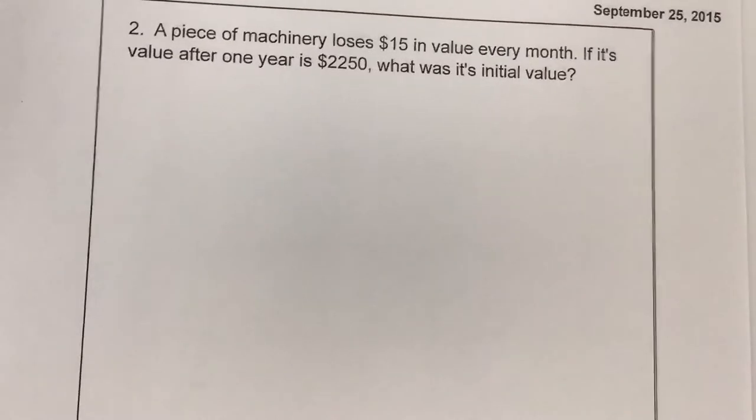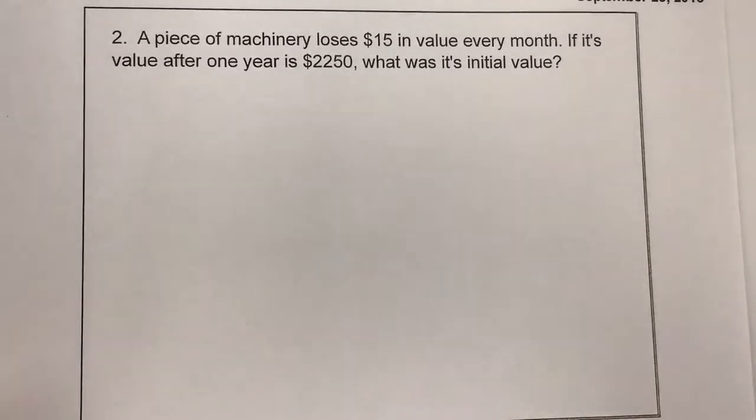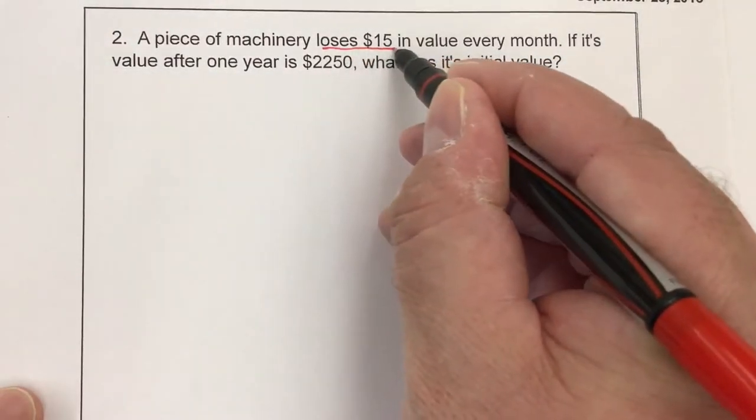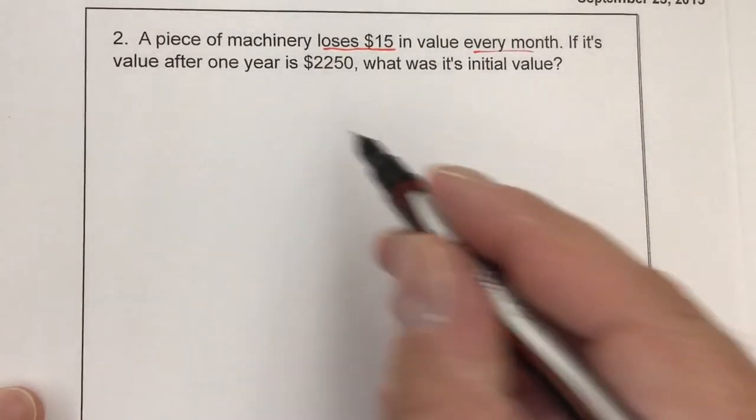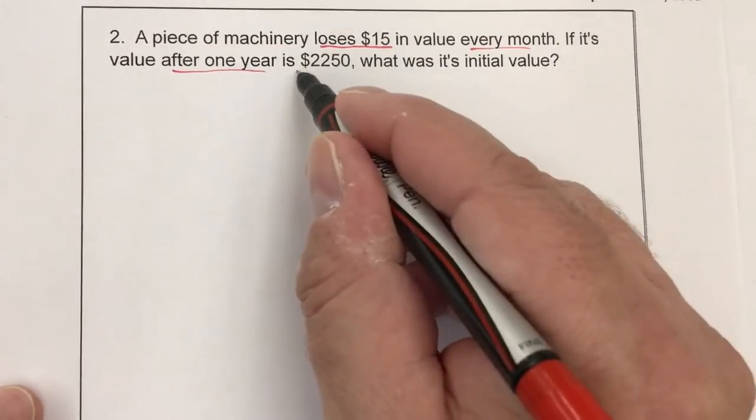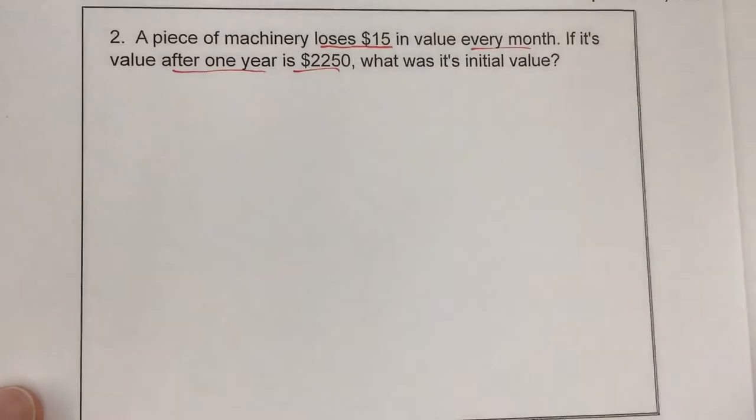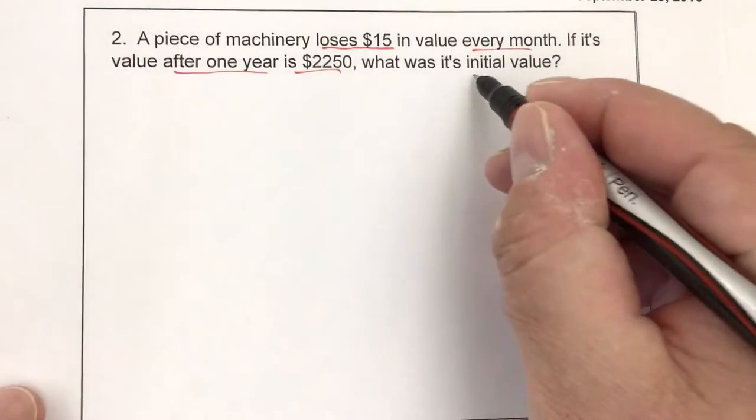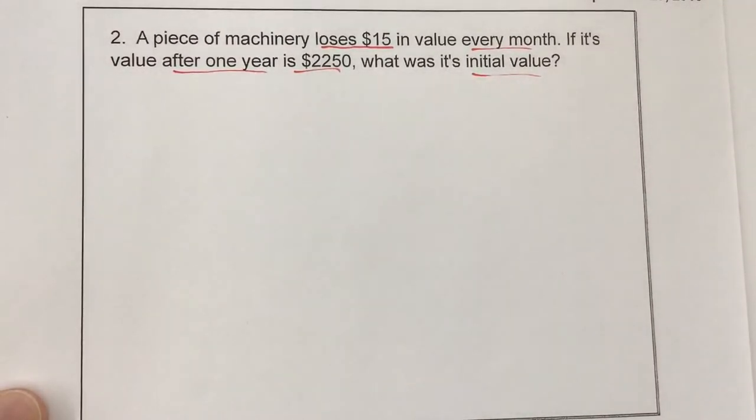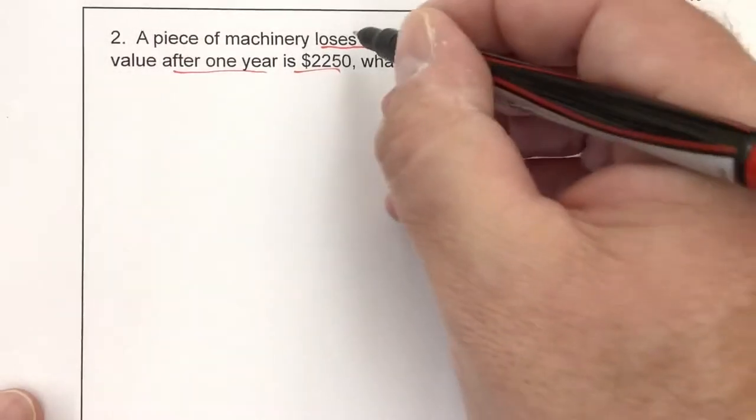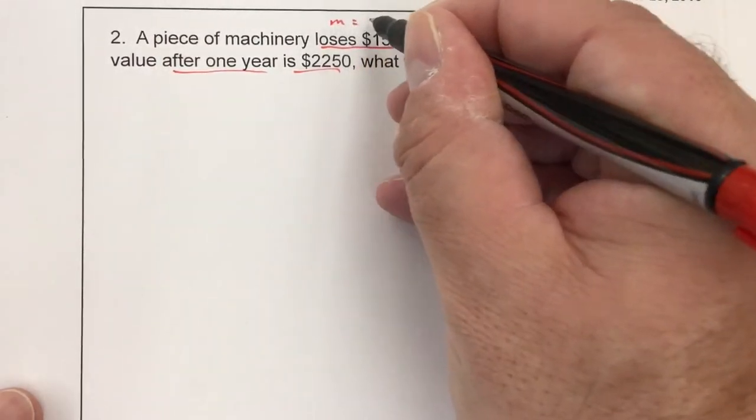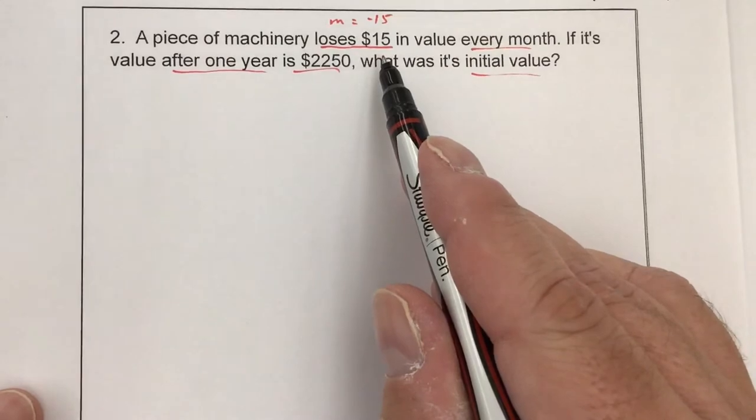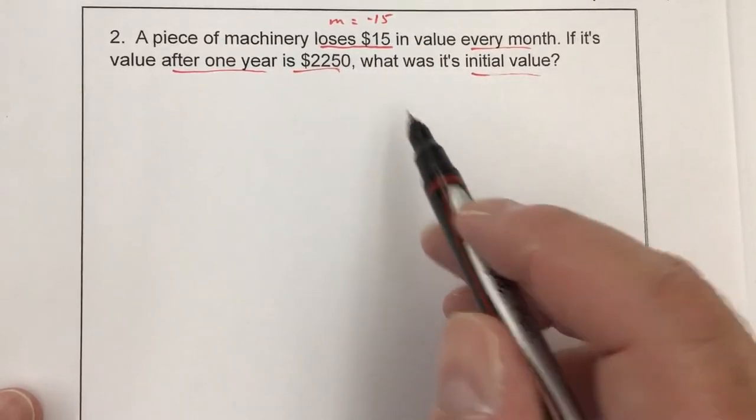Next, a piece of machinery loses $15 in value every month. Loses $15 every month. After one year, its value is now $2,250. I want to find its initial value. This is a little bit different than the last.